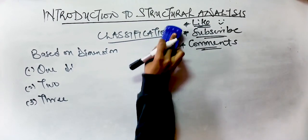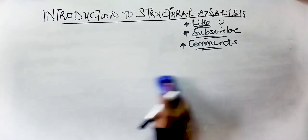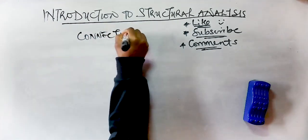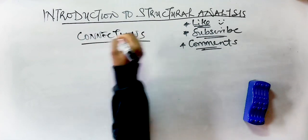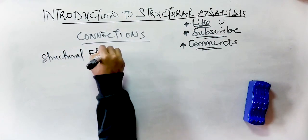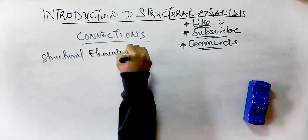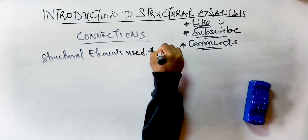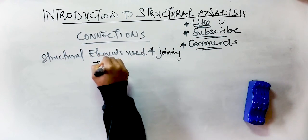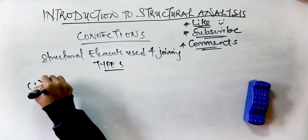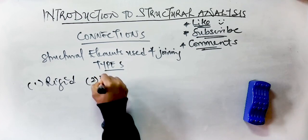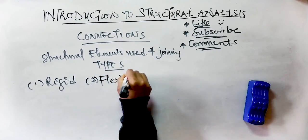The second subtopic is connections. Connections are structural elements used for joining different members of a structural steel framework. There are three types of connections, but only two are commonly used: the rigid connection, the flexible or hinged connection, and the semi-rigid connection. The semi-rigid connection is recognized by structural steel design codes but is not commonly used in practice.